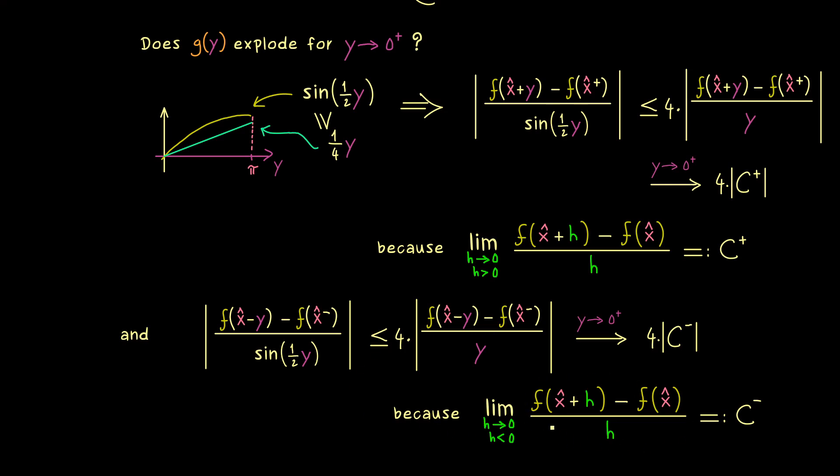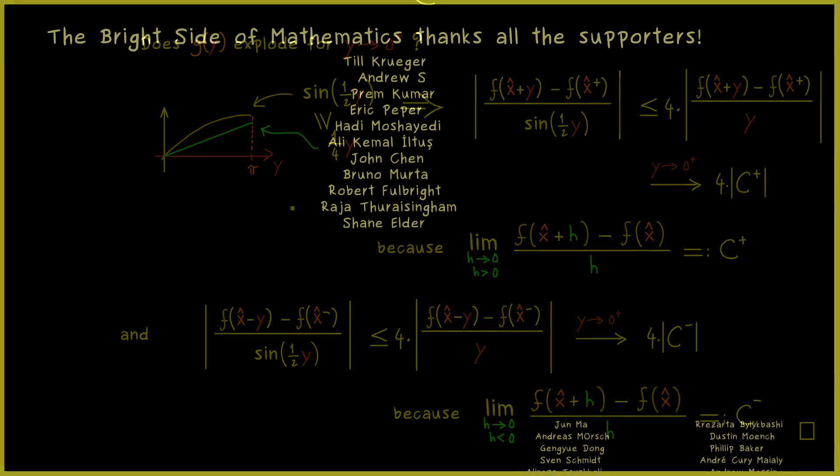Because both slopes exist as finite numbers our function g cannot explode. In other words g is bounded in a neighborhood around 0 and therefore it's an L2 function. And this finishes our proof for the pointwise convergence of Fourier series. However we are still not finished with our discussion about Fourier series. So I would say we should meet in the next video again. So have a nice day and bye bye.